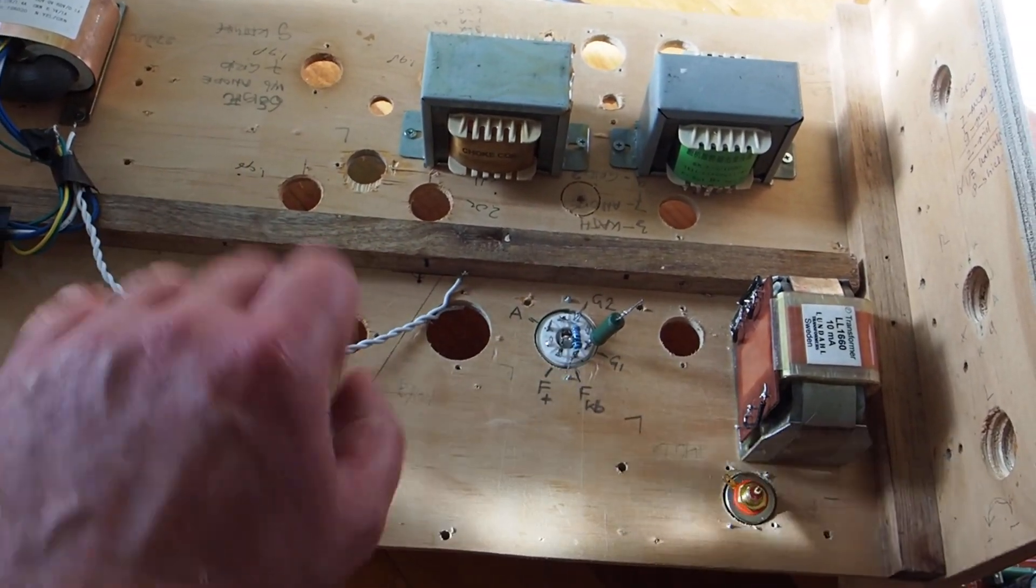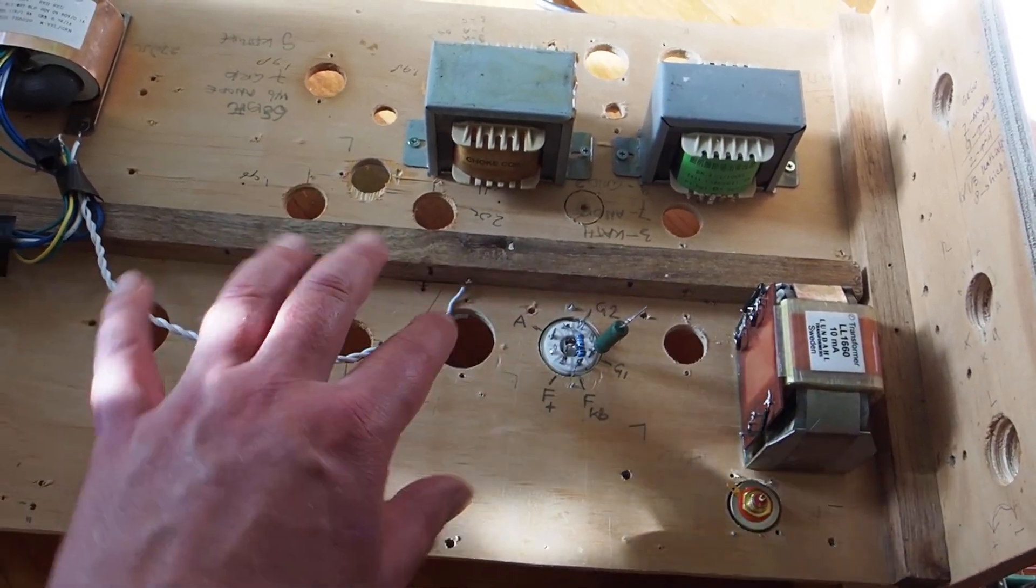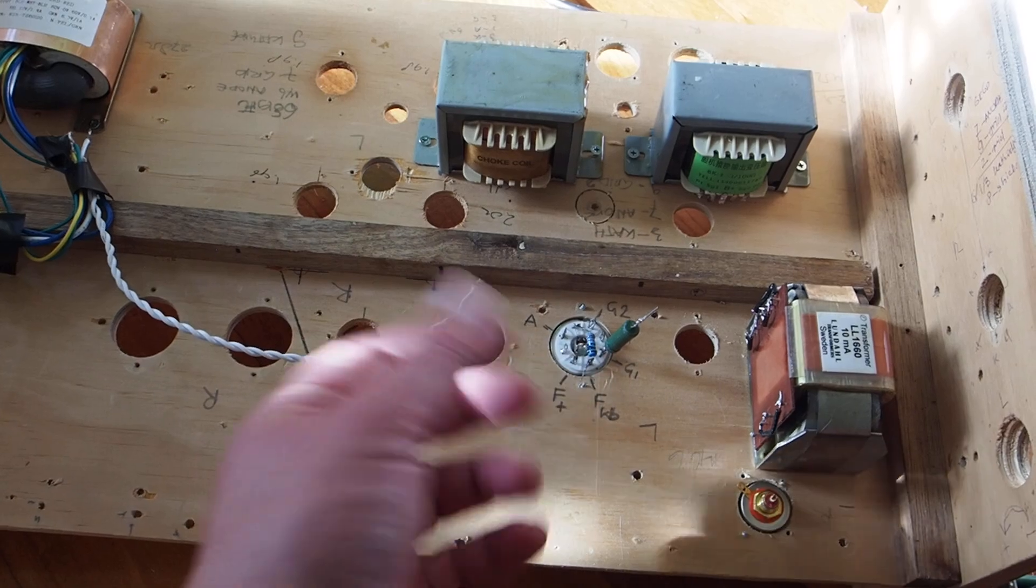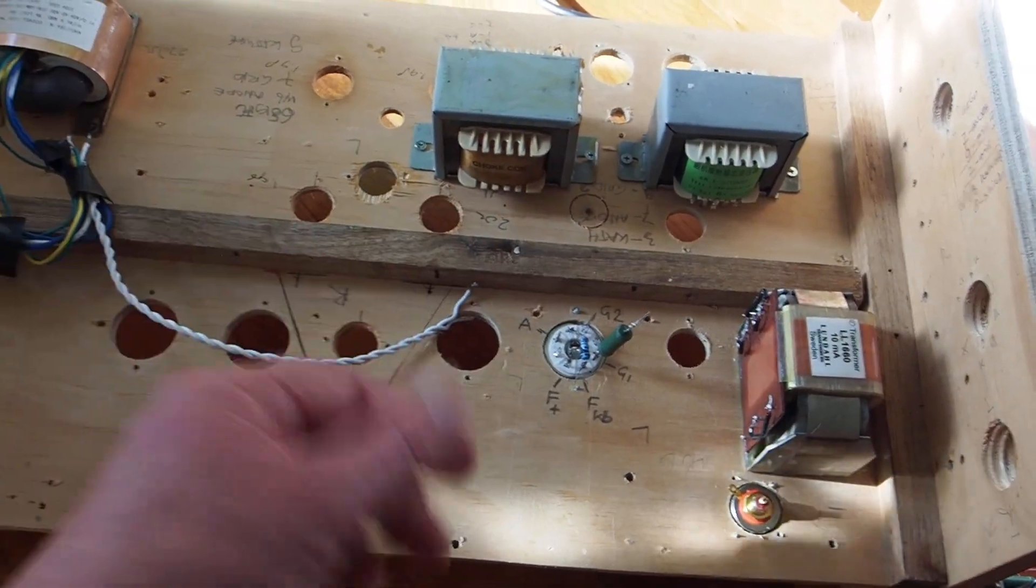And then fourth is the signal wiring. Once I've got all the higher current and AC current things, then I'll put the signal wire in there and I usually crisscross it straight and so on, so there's minimal influence on the signal.